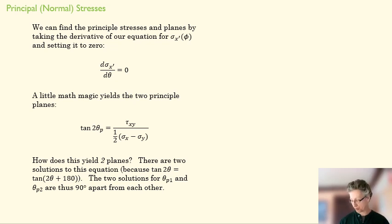You might say, what do you mean two principal planes? Well, this makes for some interesting math, because the tangent of say 45 is the same as the tangent of 180 plus 45, so tangent of 225. Go check your calculator. That means we have two solutions here.